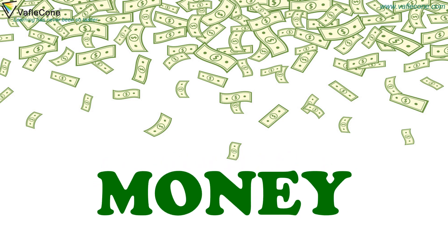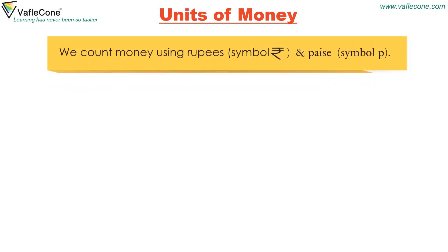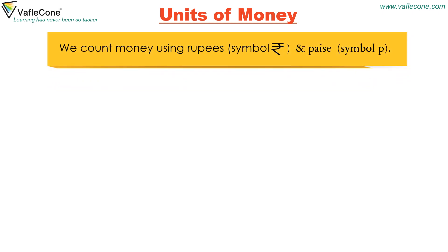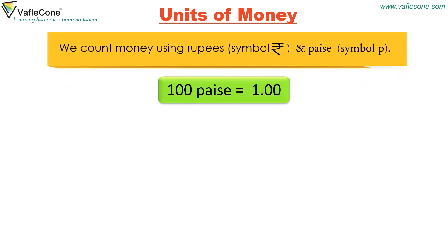Money. Units of money. We count money using rupees and paise. 100 paise is equal to 1 rupee.